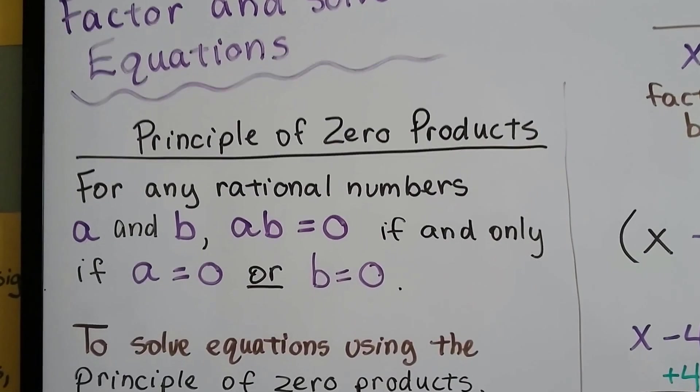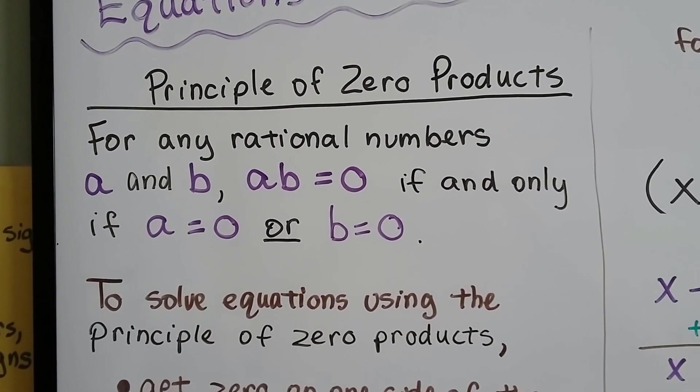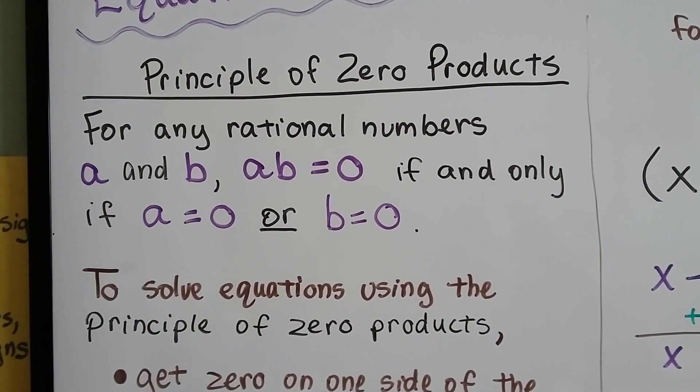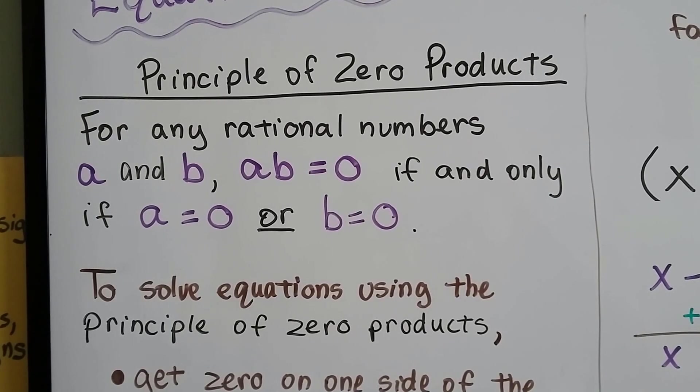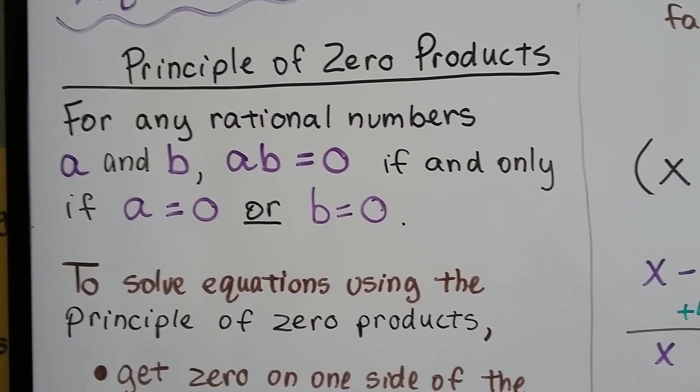In the previous video, we learned that the principle of zero products is for any rational numbers a and b, if we multiply a and b and it equals zero, that's if and only if either a or b are zero. One of them has to be zero.